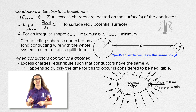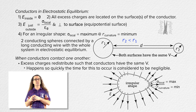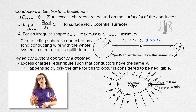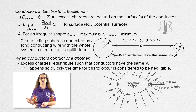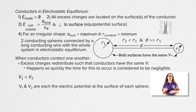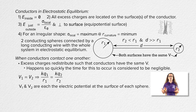For our example, the radius of sphere 2 is smaller than the radius of sphere 1, and the distance d between the two spheres is much, much larger than either radius. Because this is a conductor in electrostatic equilibrium, the electric potential on the surface of each sphere has the same value of the Coulomb constant times charge all over the radius of each sphere.